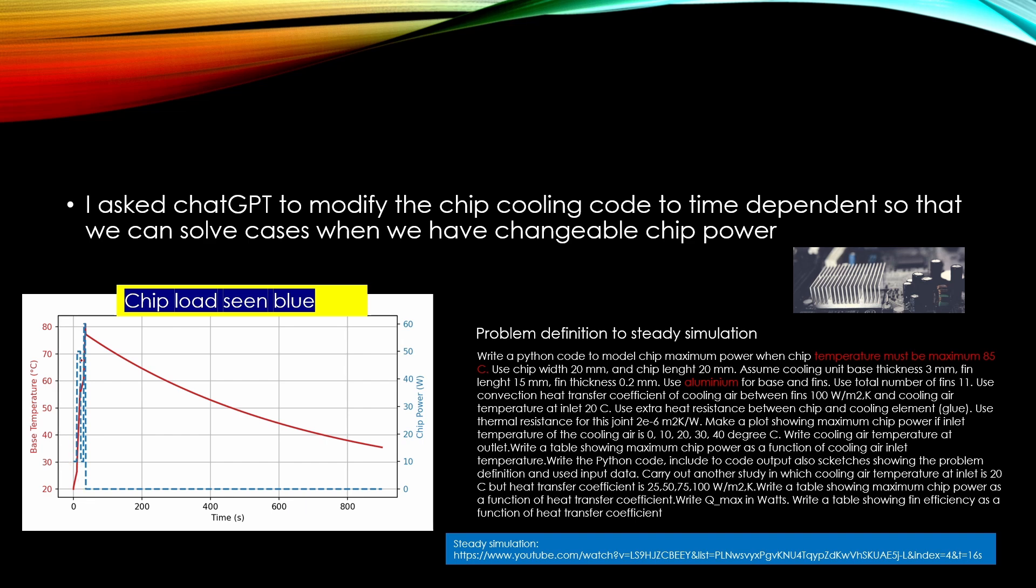This blue line is showing that at the beginning this chip power is 10 watts. Then it's increasing to 50 watts coming down to 10 watts and increasing for a short time up to 60 watts. Then after that it's steady.